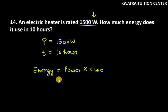Power is 1500 Watt. But you can convert it into kilowatt. How do we do in kilowatt? Divide it by 1000. So when you divide it by 1000, you get 1.5 kilowatt.